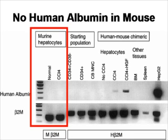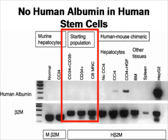What happens when you do this? Let's take a look at gene expression. This is a northern blot. The first control looks at mouse hepatocytes, either normal or treated with carbon tetrachloride — you do not see human albumin, which would make sense. The starting populations — CD34-positive/CD38-negative cells representing primitive human bone marrow cells, more differentiated CD34-positive cells from human bone marrow, or cord blood mononuclear cells — do not express transcripts for human albumin, implying there is no liver progenitor cell in the bone marrow that produces albumin.